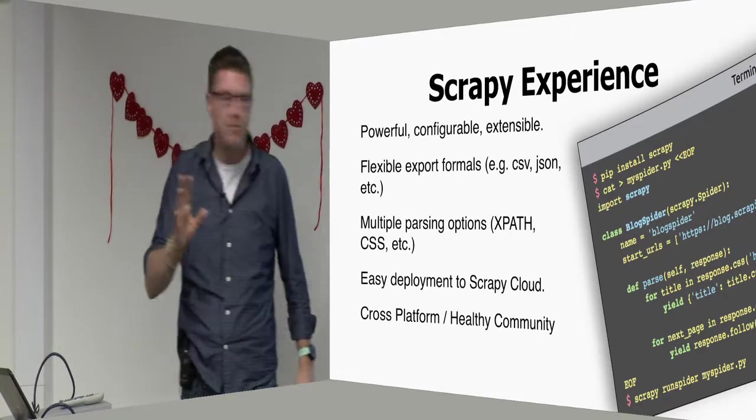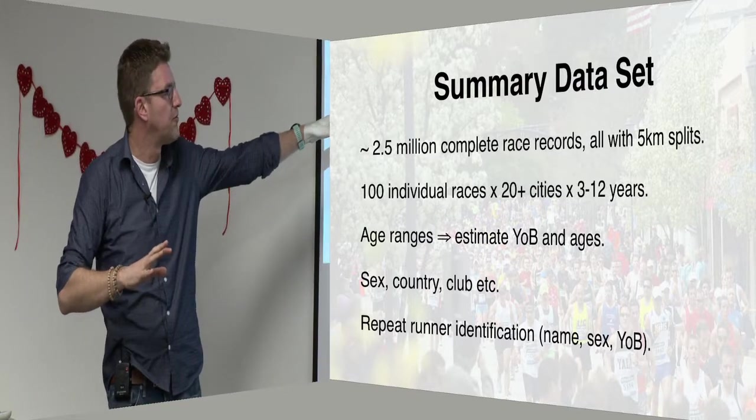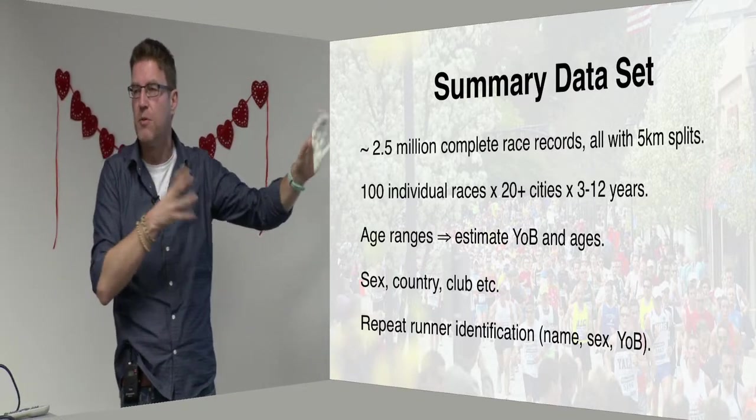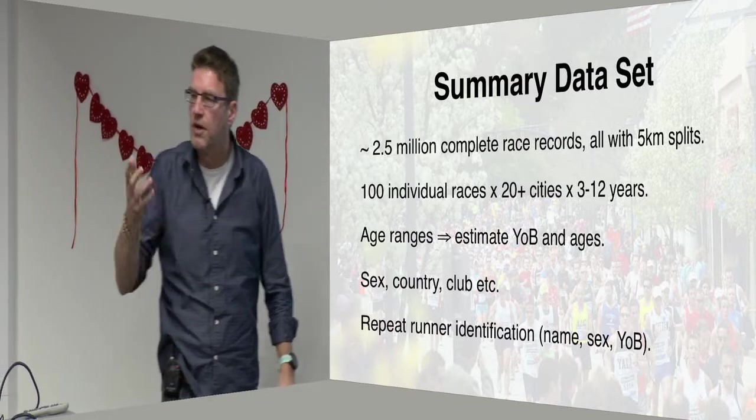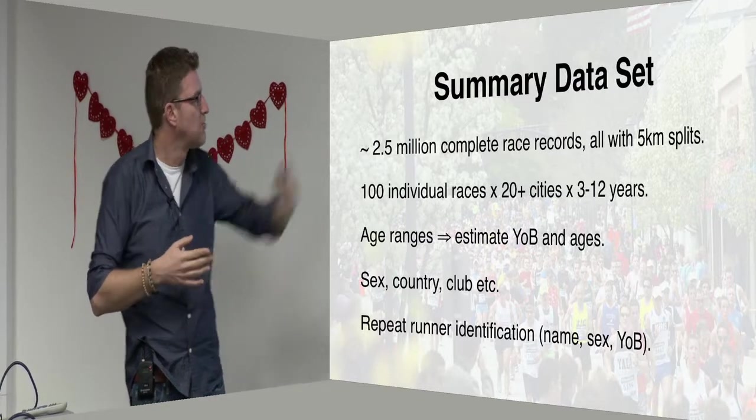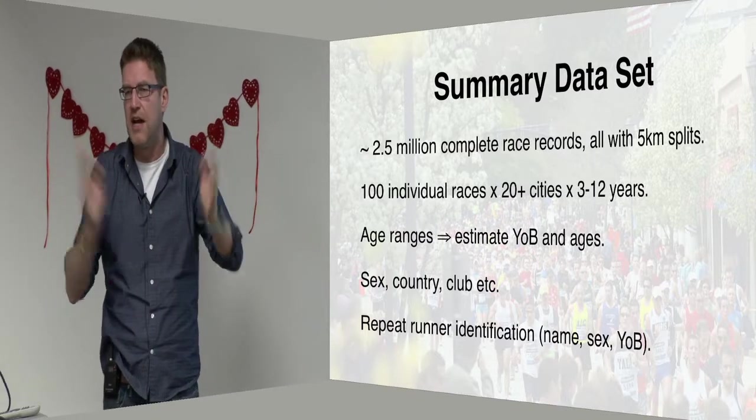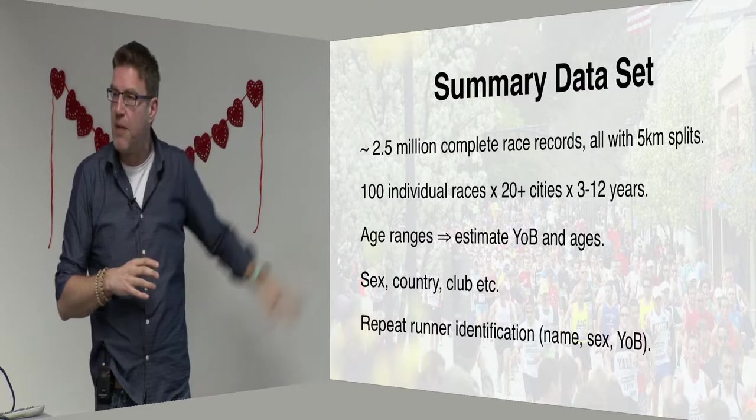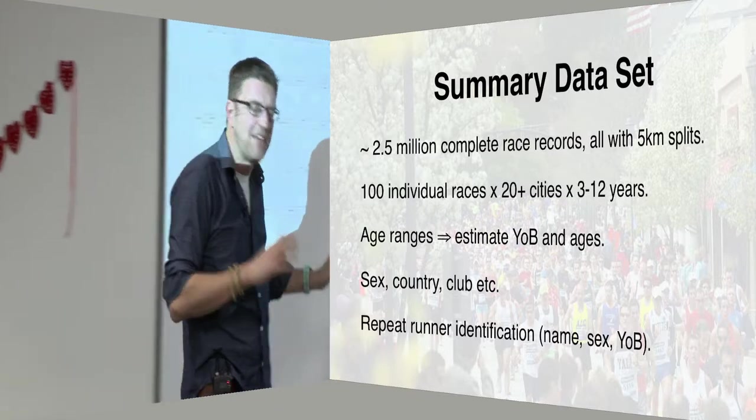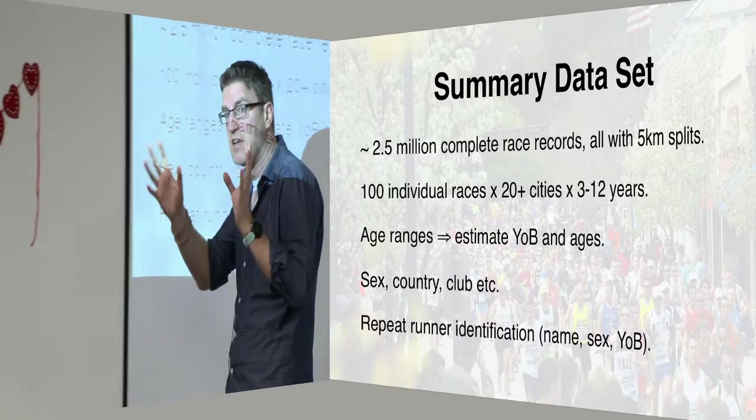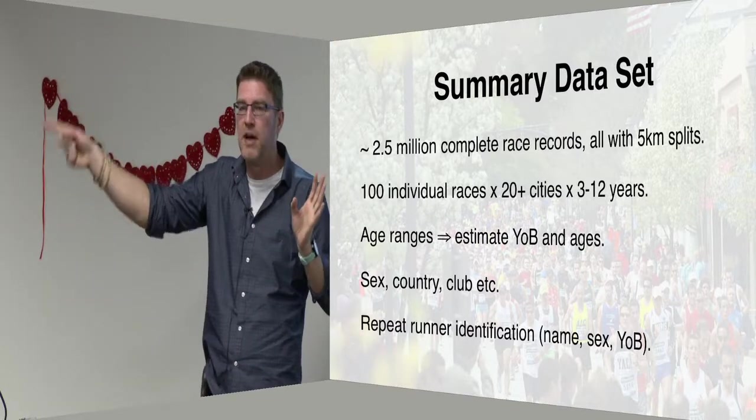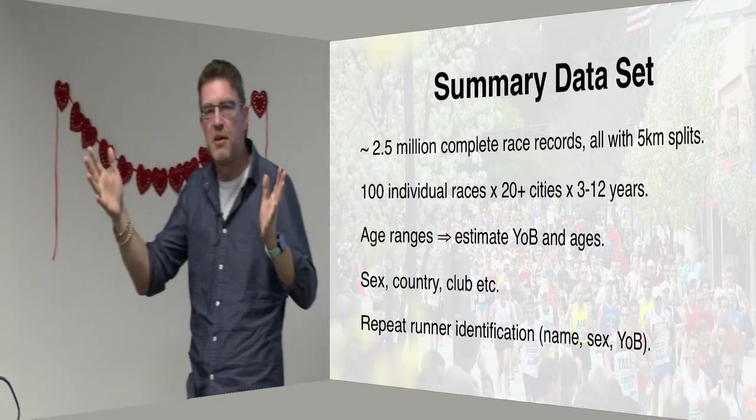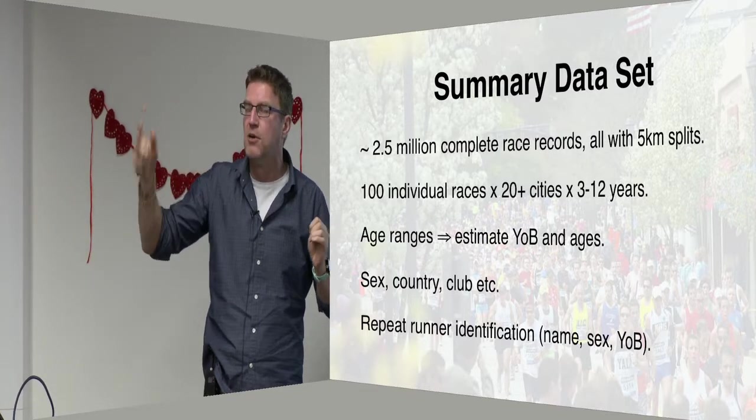Over time I was able to collect about two and a half million race records for over a hundred different races across twenty cities over a twelve year period roughly speaking. For some cities you have it for fewer years, maybe two or three years. For other cities like Chicago and Boston and New York you have longer term data. You don't always get precise age information. Sometimes you get five-year age categories. You'll typically get information about male-female runners, their country of origin, club information if they're in running clubs. You're able to guesstimate repeat marathons. You've typically got the runner's name, but that's not good enough to find the same runner across multiple races because lots of people have the same names. But you can do it with a combination of name and sex and year of birth and perhaps typical finish time.